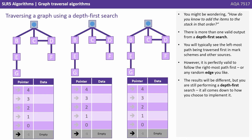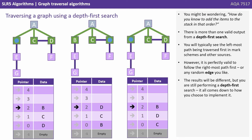You might be wondering how do you know to add the items to the stack in that order? There is more than one valid output from a depth-first search. You'll typically see the left-most path being traversed first in mark schemes and other sources. However, it would be perfectly valid to follow the right-most path first, or indeed any random edge you like. The results will be different, but you'll still be performing a depth-first search. It all comes down to how you choose to implement it when you code the search algorithm.